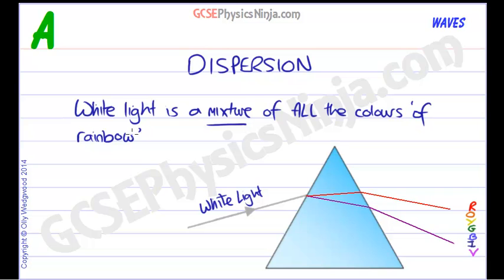When you see a rainbow, you're actually seeing dispersion happening through millions and millions of raindrops falling from the clouds as the sunlight falls through them.